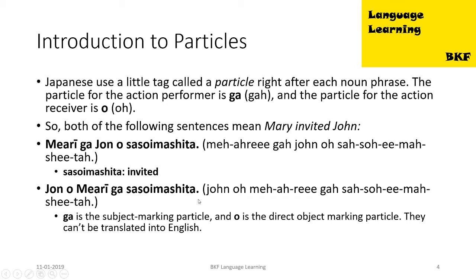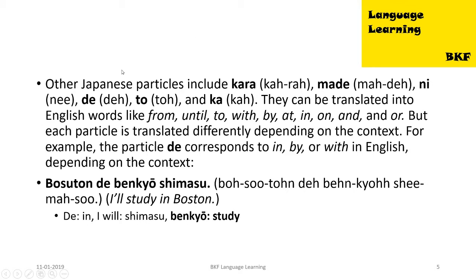So 'ga' is the subject-marking particle and 'o' is the direct object-marking particle, and they do not have any equivalents in English. Other Japanese particles include 'kara', 'made', 'ni', 'de', 'to', and 'ka'.